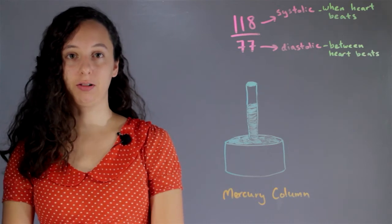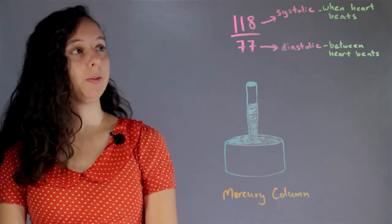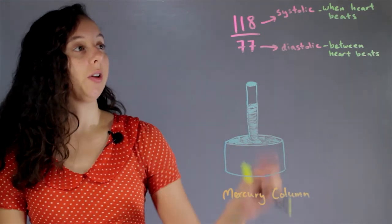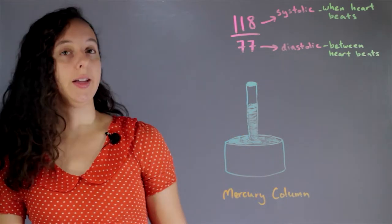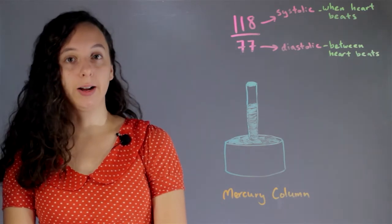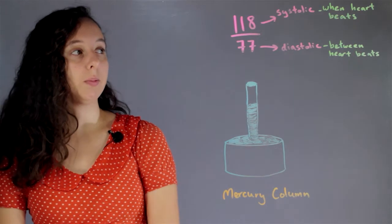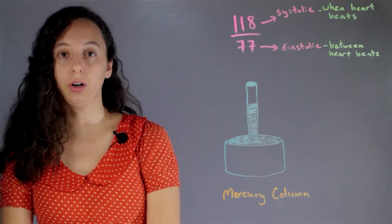All right, so let's review how we get blood pressure. Blood pressure is always given to us in two numbers, and the first one on top is systolic, and that's the pressure inside your heart when your heart's beating. And the bottom number is diastolic, and that's the pressure inside your heart in between heartbeats.